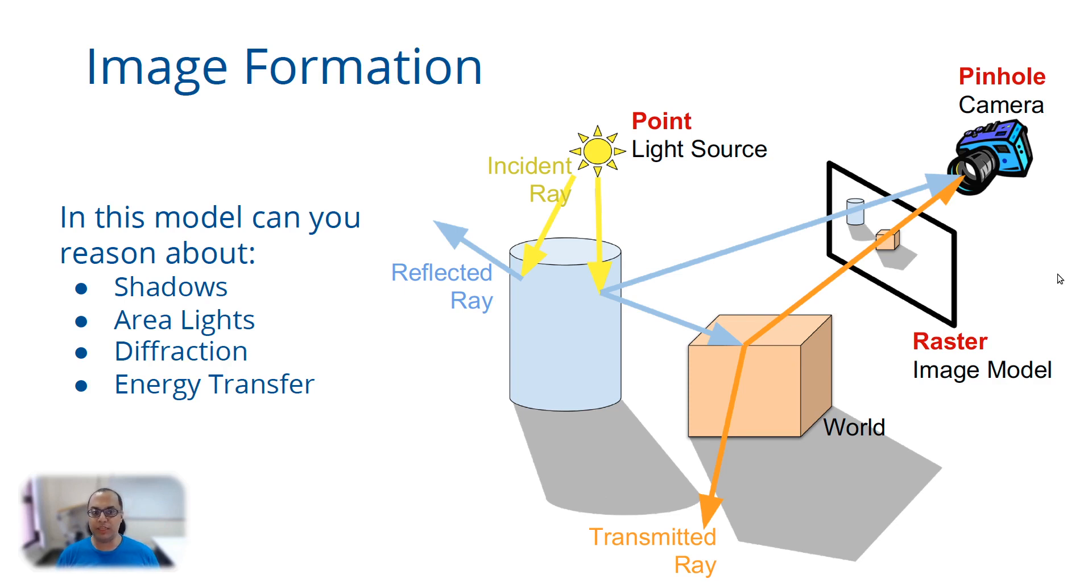What I mean by can you reason about shadows is that if you see the image that has been created using such a model, will you be able to see shadows? Shadows are generated when light from a light source is blocked by an object from reaching another surface. That surface lies in the shadow of the first object. If I have this imaging model where we have a point light source and a pinhole camera and a raster image model, will I be able to draw shadows for objects which are cast on other objects? You can imagine that there might be a floor here on which this shadow is being formed. Will I be able to see these shadows in the image?